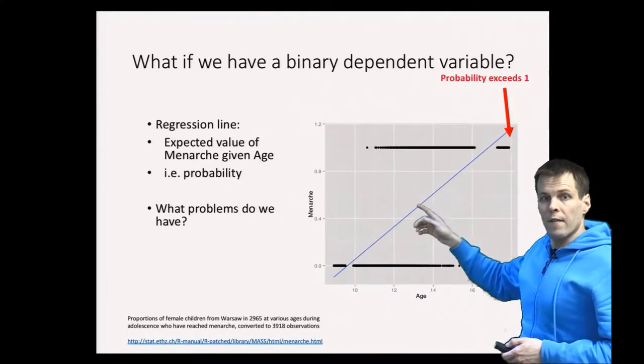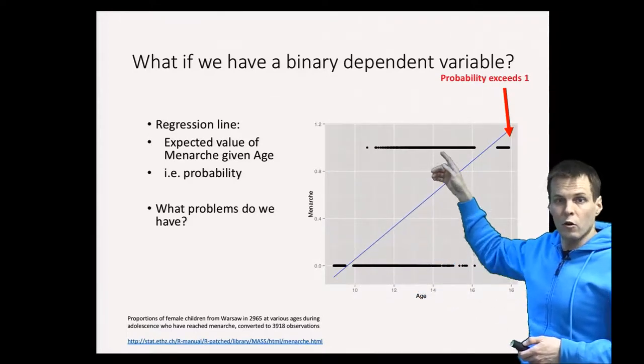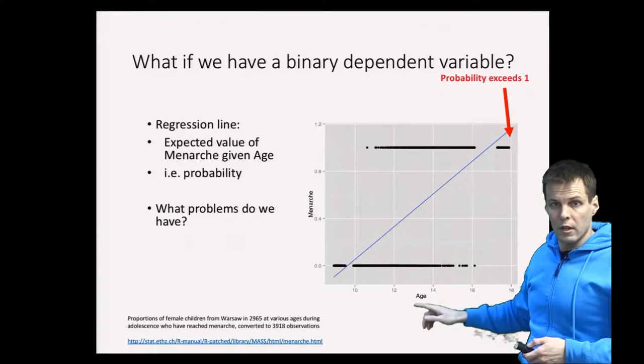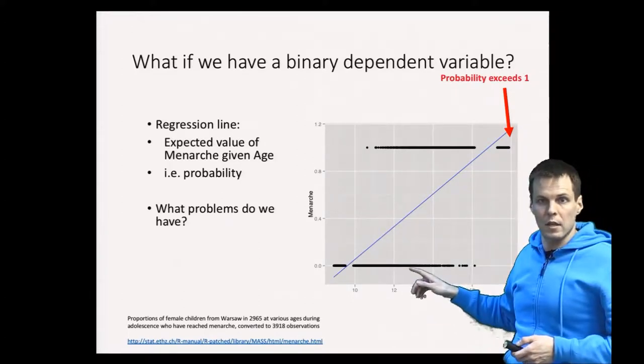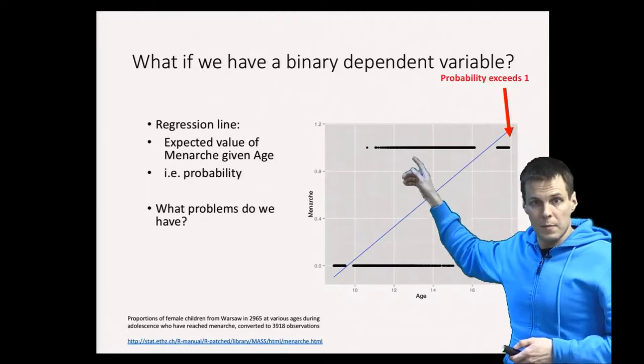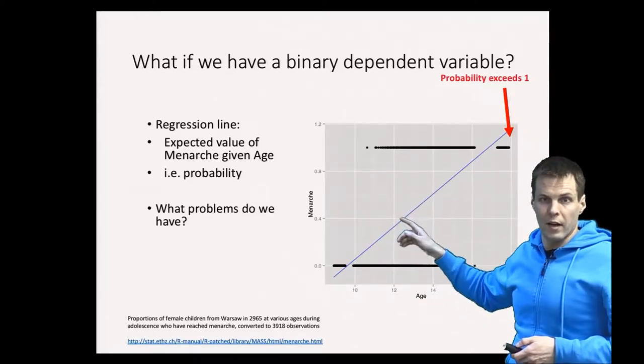The value here, the regression line, gives the expected value of the dependent variable given age. In this case, because the dependent variable is zeros and ones, the expected value is the probability, expected probability, of having had menarche.